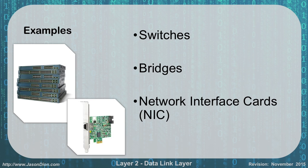Examples of Layer 2 devices include switches, bridges, and network interface cards. Switches make their logical decisions based off MAC addresses — anytime you hear MAC addresses, think Layer 2, Data Link. Bridges are a precursor to switches and operate based off MAC addresses the same way switches do — they are a Layer 2 device. Network interface cards deal with the MAC address uniquely identifying them, so they are part of Layer 2 as well.